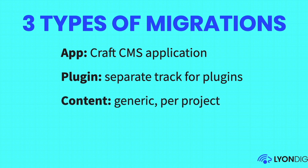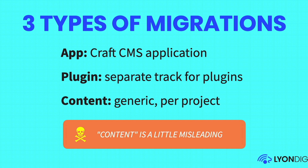The third track, and the one we're going to look at, is the content track. These are generic migrations specific to your project. The word 'content' in this context can be a little confusing — we're not necessarily talking about changing an entry or web content in your CMS. It's just the term for a migration you can create on your own and run for your specific project.